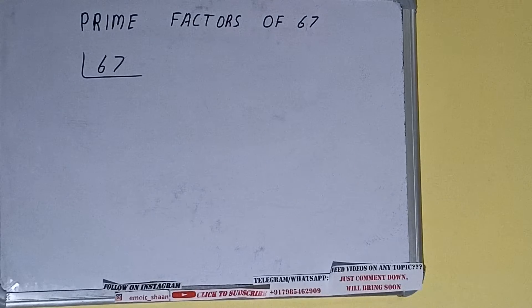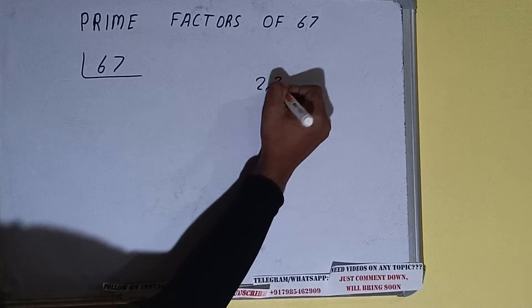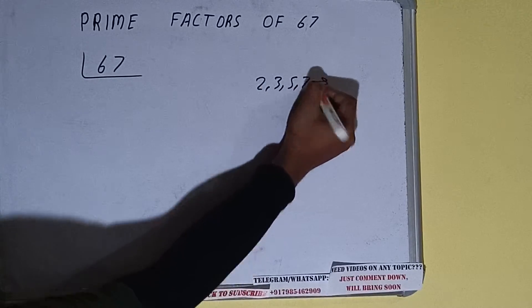The next thing we need to know about is what are prime numbers. So prime numbers are numbers that are divisible by 1 and the number itself, like 2, 3, 5, 7, and so on.